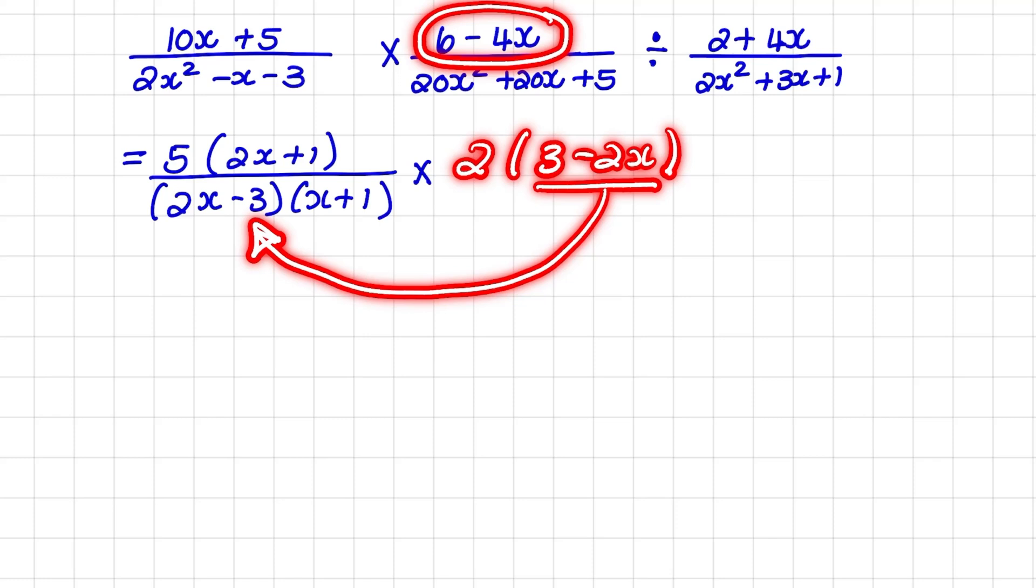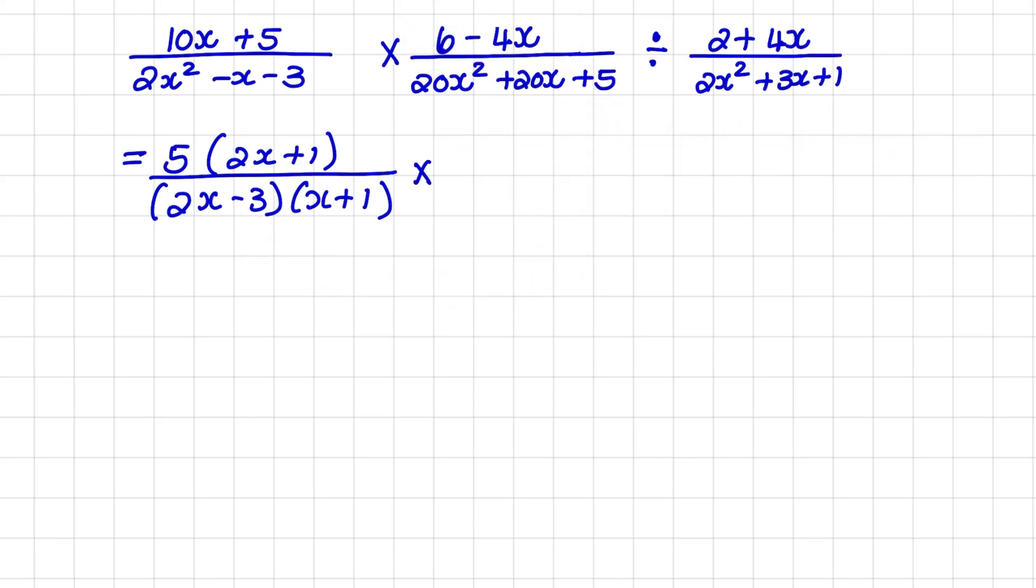So I'm asking myself, how can I write 3 minus 2x to be 2x minus 3? And I notice that it will be better for me to take out a negative 2. That will lead to a bracket of 2x minus 3. Because when I multiply out, I have negative 2 times 2x, which is negative 4x, and negative 2 times negative 3, which is positive 6.